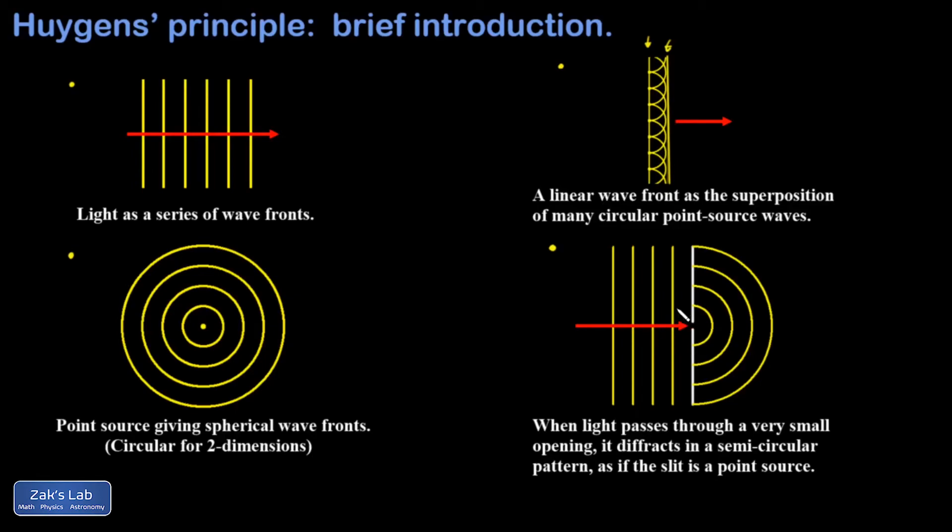So each of these wave fronts is made of thousands of point sources. They slam into this screen that only allows light to move through a tiny slit. That means what's going on in the slit is basically a point source. And we know that point sources create these circular waves.